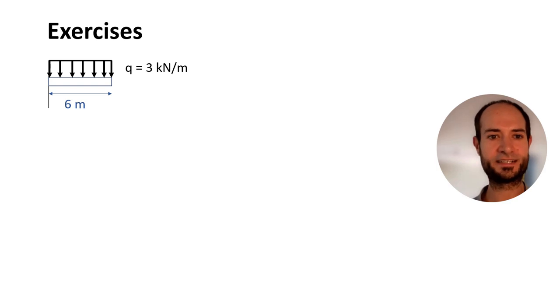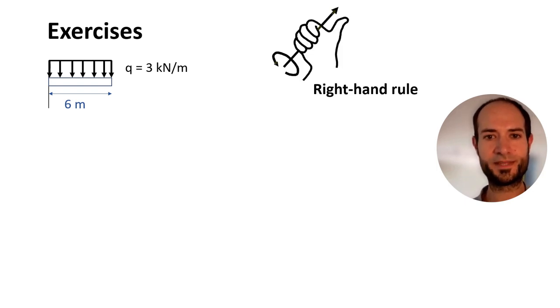So, first exercise is a 6 meter cantilever with a light load. And here, as before, the right hand rule. I'm just going to call this point here A, and just to remember moment equals load times distance. It's always a good practice to indicate the positive direction of the moment. So we said anticlockwise positive.